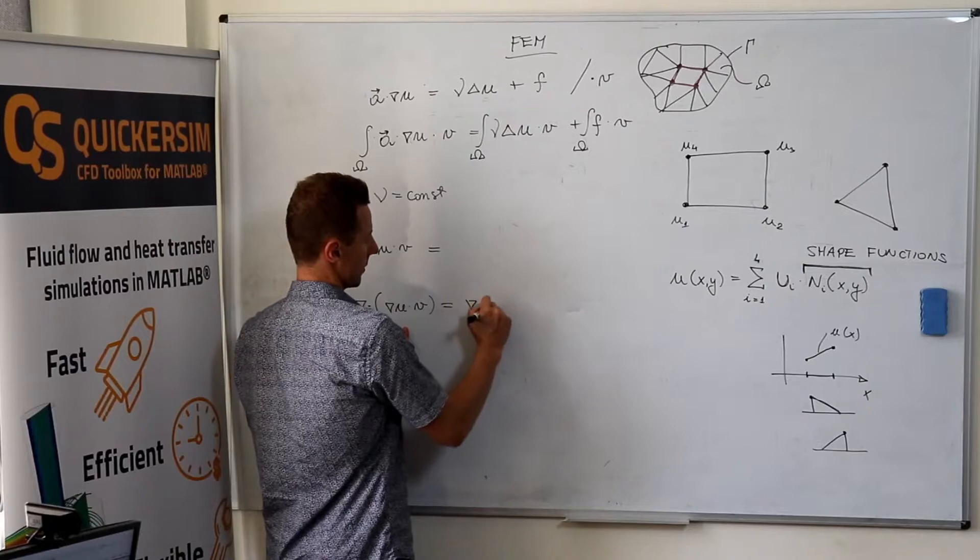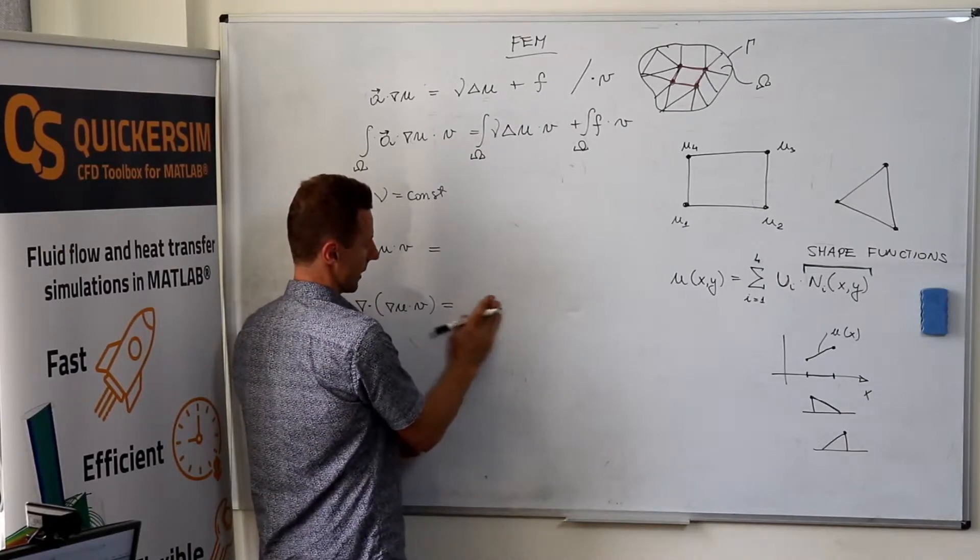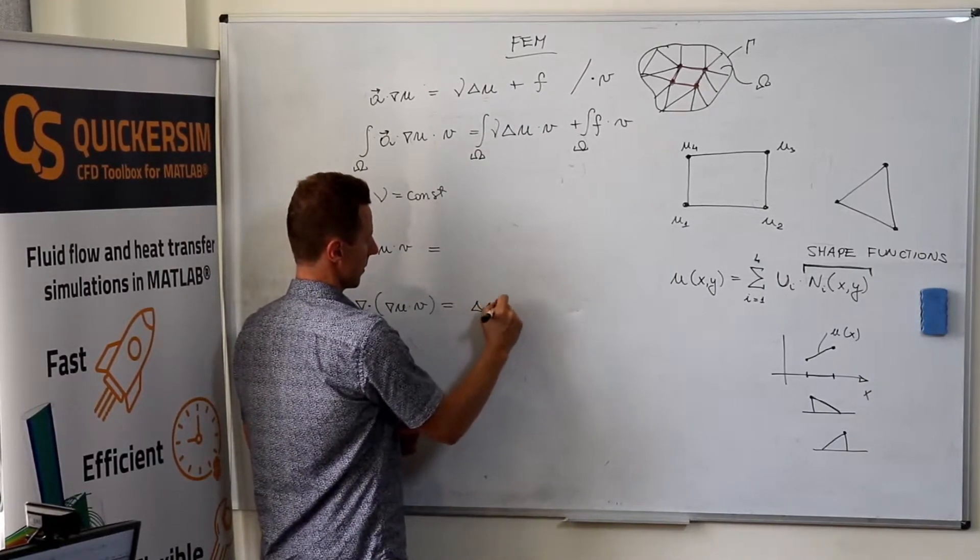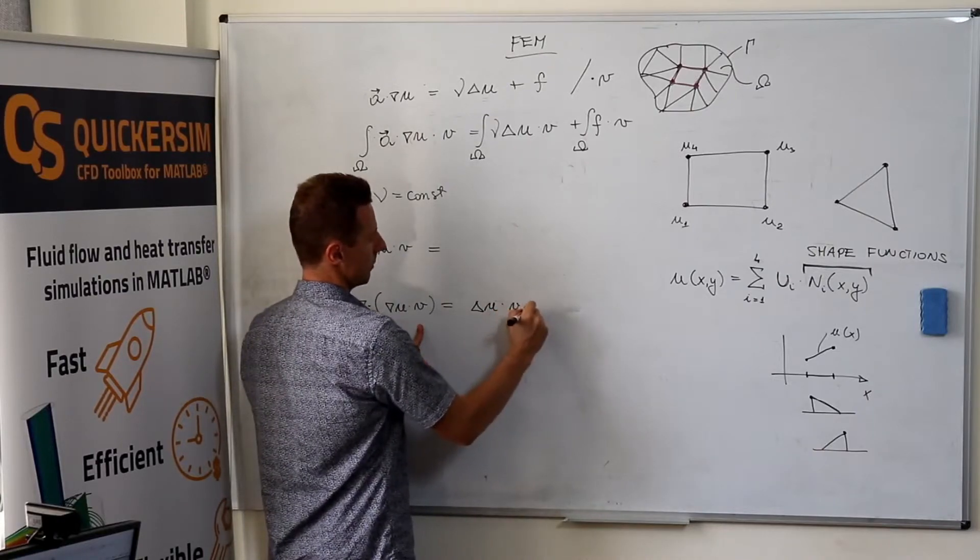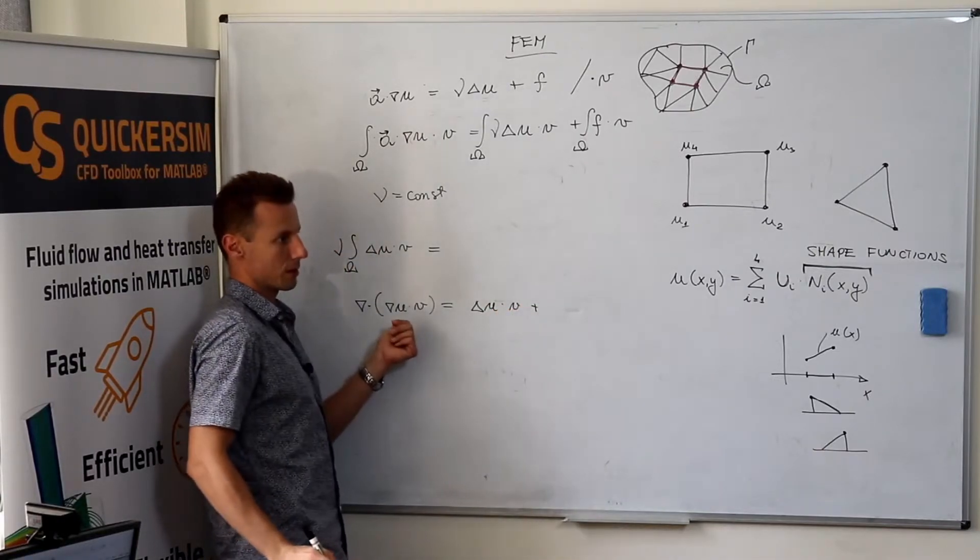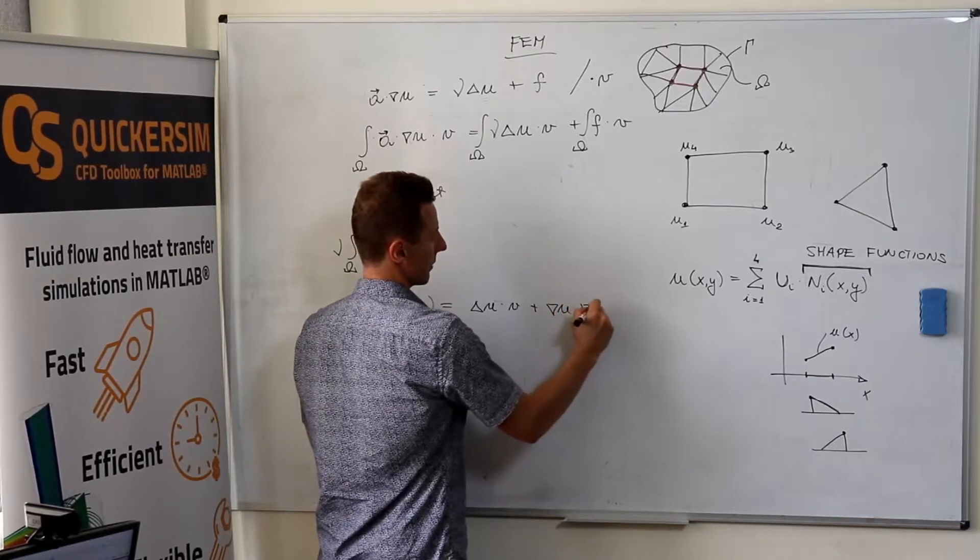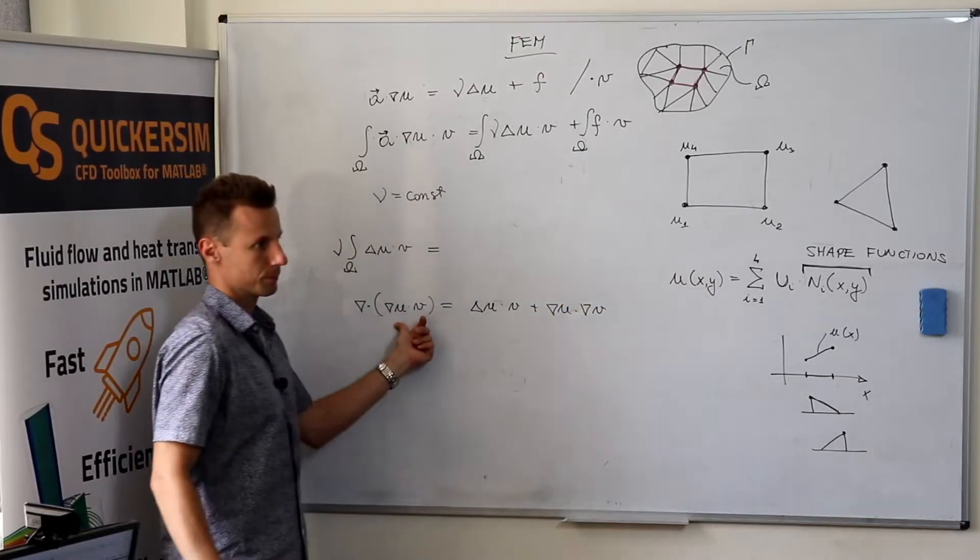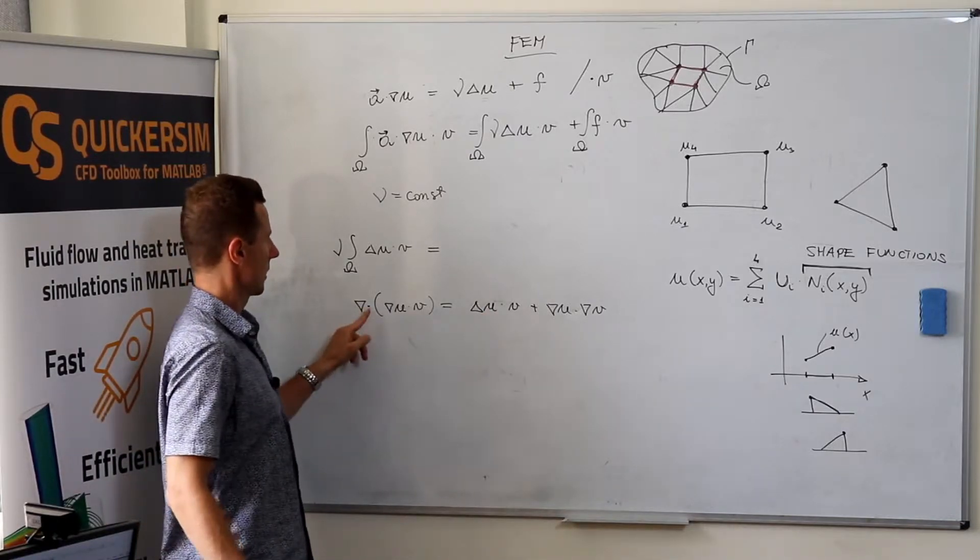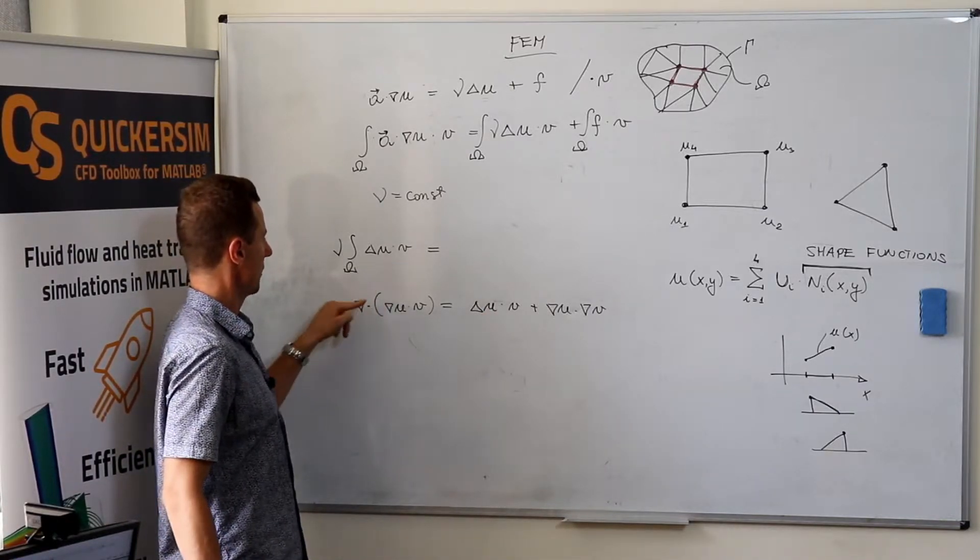That's something like that is the location times the second term, plus the first term times the derivative of the second term. Right? So let's take this and put it here.